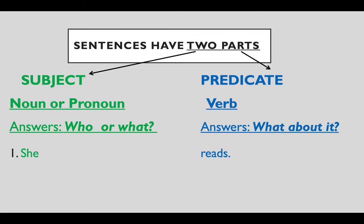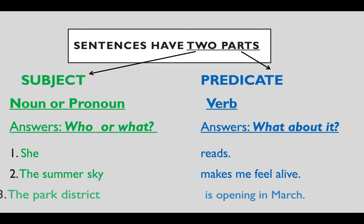For example, she reads. She is the subject, reads is the predicate. The summer sky is the subject, makes me feel alive is the predicate. The park district is the subject; is opening in March is the predicate.